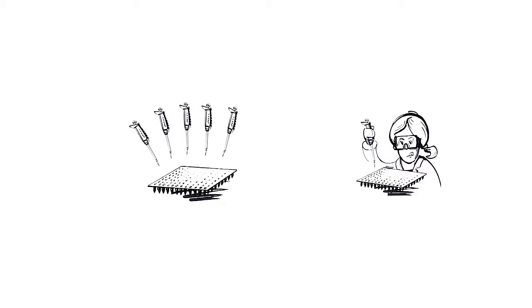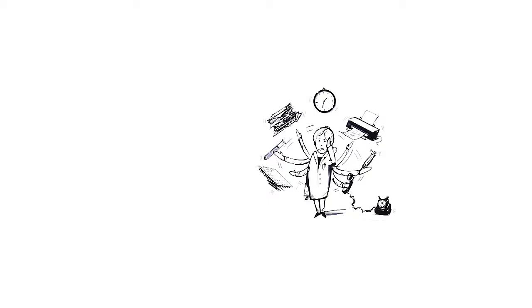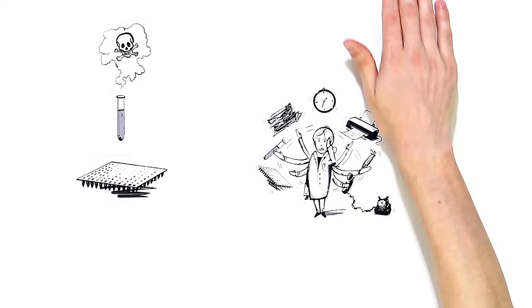Janet has to carry out a lot of HLA typings in the lab. This involves numerous pipetting stages which can take a long time and she has to concentrate very hard to avoid making mistakes. She often has to do too many things at once. Sometimes Janet even has to work with toxic substances.